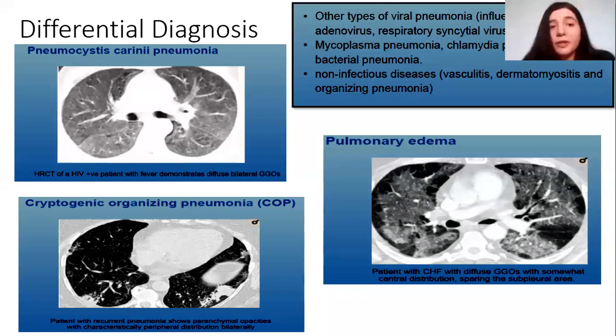Some pitfalls: when a patient is moving during high-resolution CT scan, we can have false positive findings such as pseudo ground glass opacities, pseudo bronchiectasis, or double fissures. Also, pulmonary vascular disease can cause mosaic attenuation, which is the result of a reduction in perfusion in the distribution of occluded pulmonary vessels.